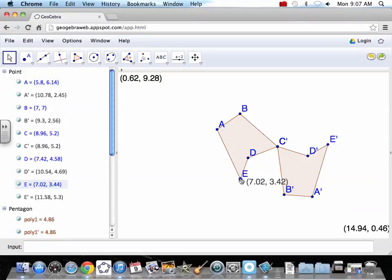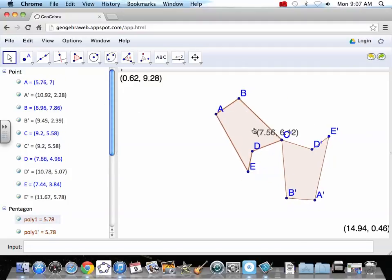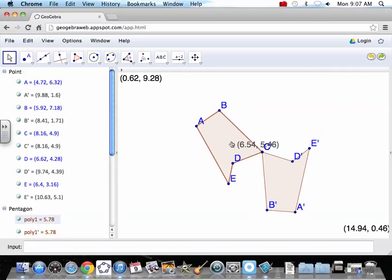So if we move E, E moves correspondingly. Let's double check that 140 aspect. If I move my polygon, it's all attached so nothing else moves because it's attached. Again, we're going to double check that.